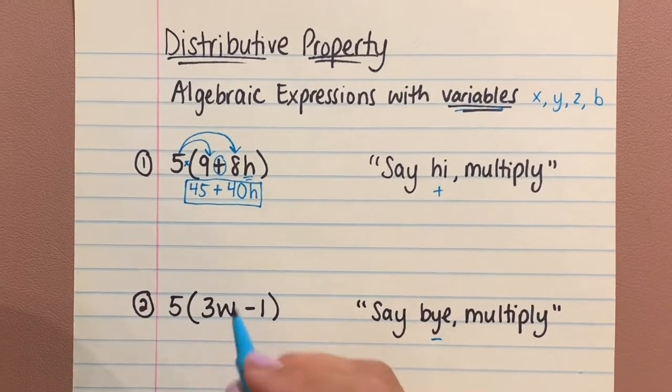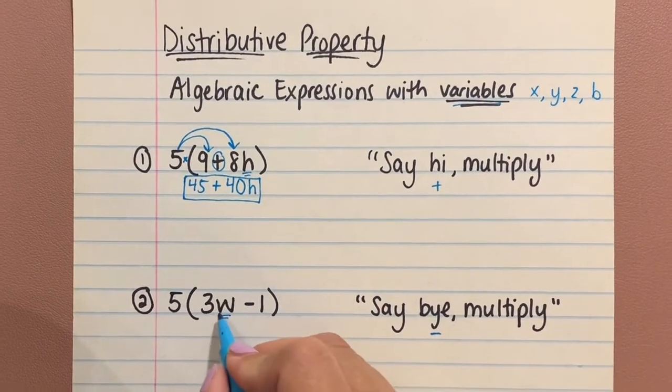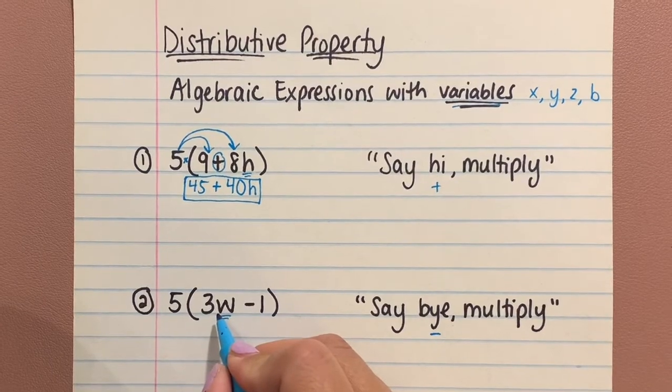Just like before, your variable this time is W. And this time that little baby W is attached to the three, so the three and the W are never going to leave each other.